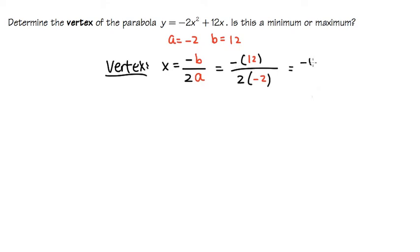On the top is negative 12, over the bottom is going to be 2 times negative 2, that's going to be negative 4. And when we divide negative 12 over negative 4, we get positive 3.